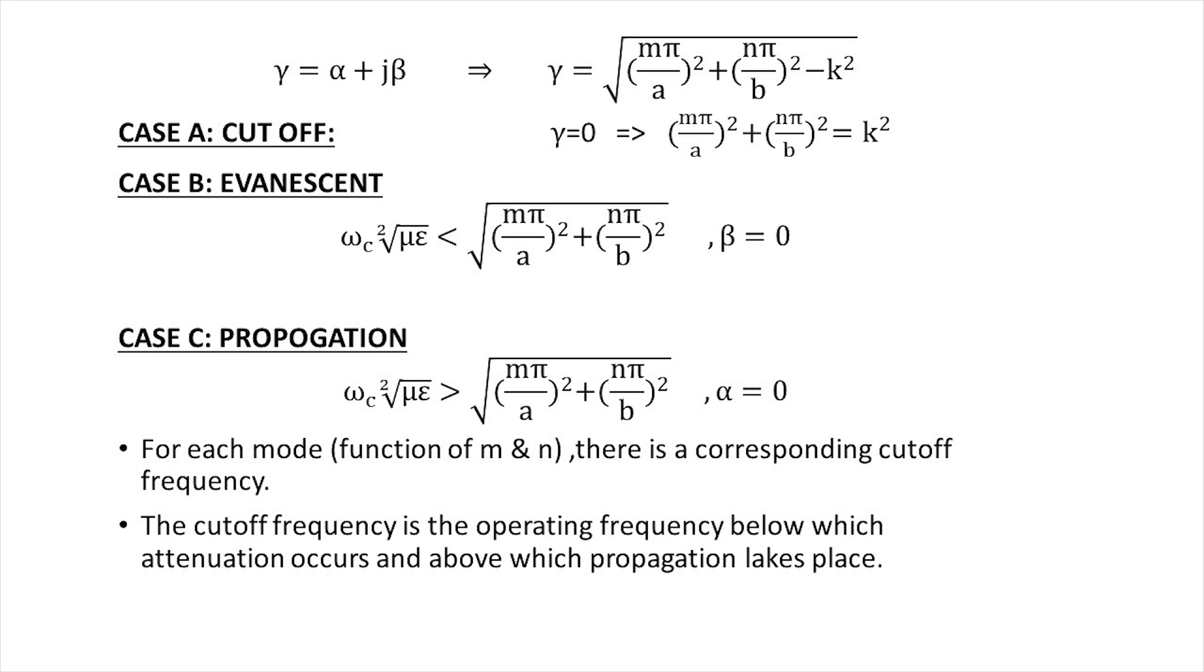Evanescent: beta equals to zero. In this case, we have no wave propagation at all. These non-propagating or attenuating modes are said to be evanescent.